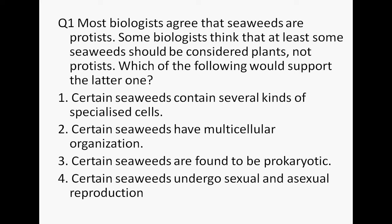Analyzing the options: certain seaweeds contain specialized cells — this is about multicellular organization. Certain seaweeds are found to be prokaryotes — no, that would place them in Monera. Certain seaweeds undergo sexual and asexual reproduction — we know that some protists like Paramecium and Chlamydomonas also undergo both, so that doesn't help. The correct answer is: certain seaweeds have multicellular organization.